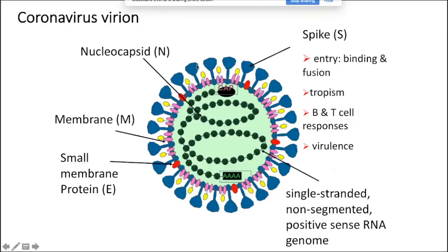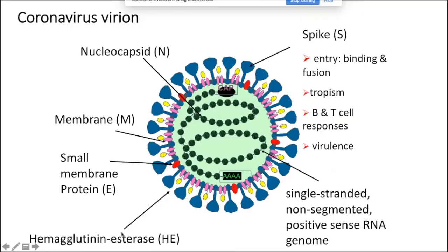The coronavirus virion is actually quite simple. There is a very long RNA in a helical configuration, complexed with a basic nucleocapsid protein forming a helical capsid. Around the capsid is a membrane derived from the host cell membrane. There are three proteins in the membrane: the spike protein, which mediates entry, binding, and fusion and is a major determinant of tropism, B and T cell responses, and virulence. The other two glycoproteins are the M protein (membrane protein) and the E protein (small membrane protein). Some coronaviruses also encode a hemagglutinin esterase protein—a small spike glycoprotein—but SARS-CoV-2 does not encode that protein.